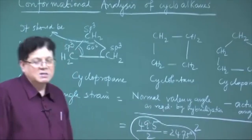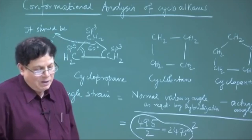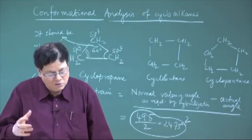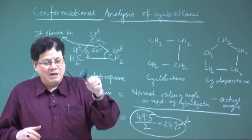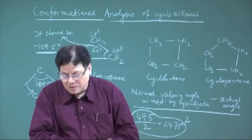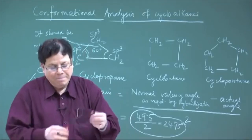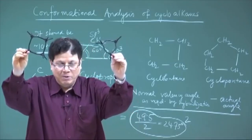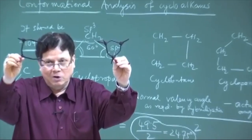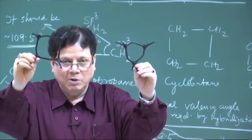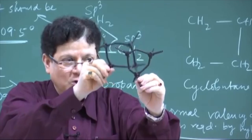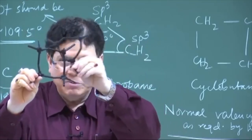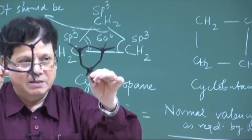This is how Bayer started calculating angle strain. He said that because cyclopropane has more angle strain, it is highly unstable. Now consider cyclobutane: if you compare the two molecular models, the amount of bending of the bonds is less in cyclobutane than in cyclopropane.